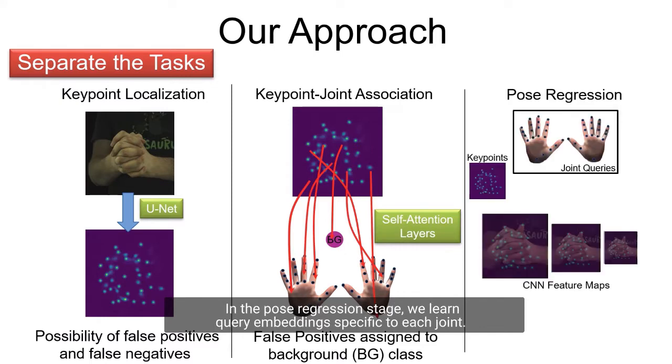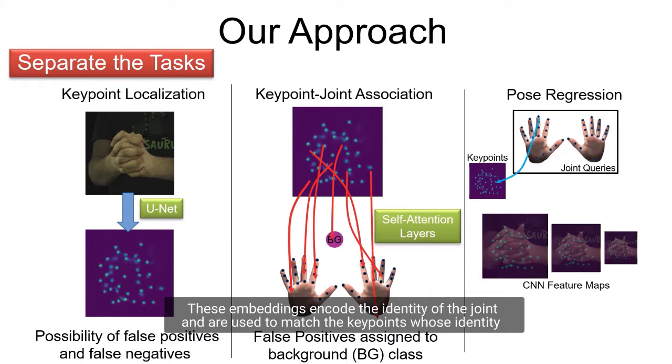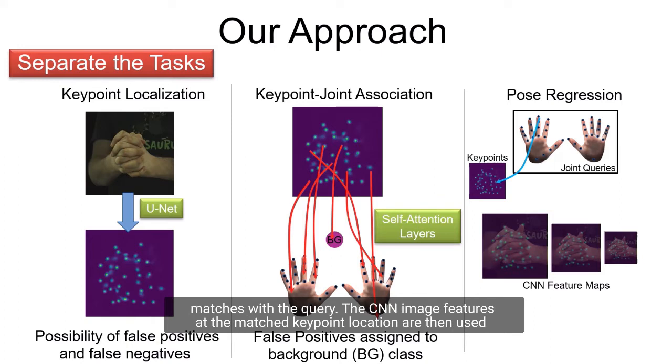In the pose regression stage, we learn query embeddings specific to each joint. These embeddings encode the identity of the joint and are used to match the keypoints whose identity matches with the query. The CNN image features at the matched keypoint locations are then used to regress the pose of the joint.